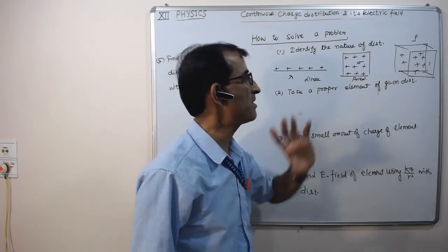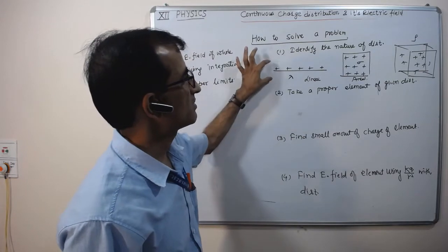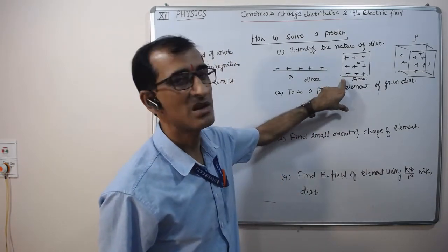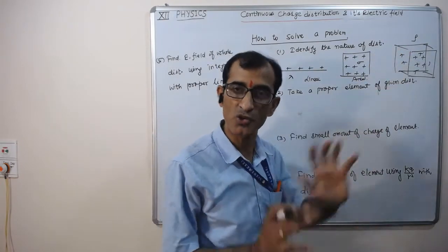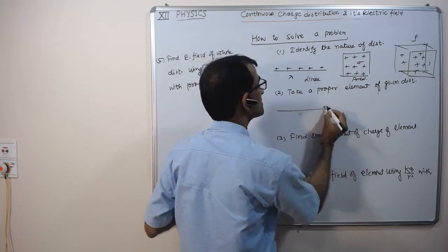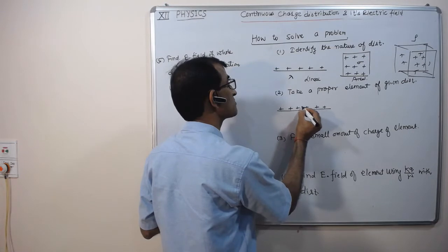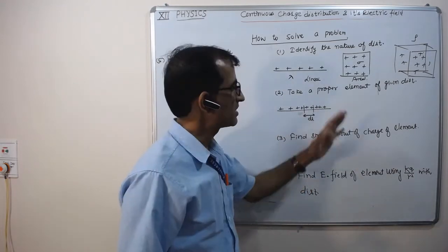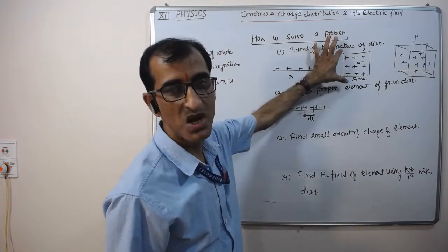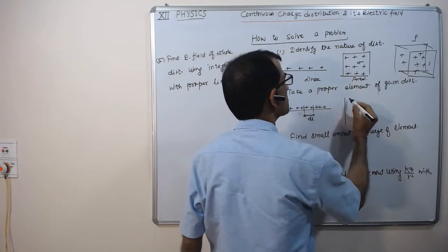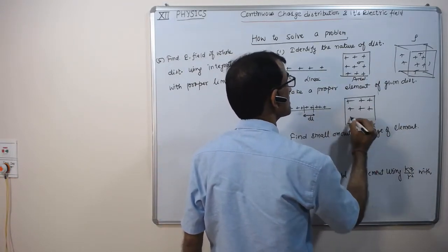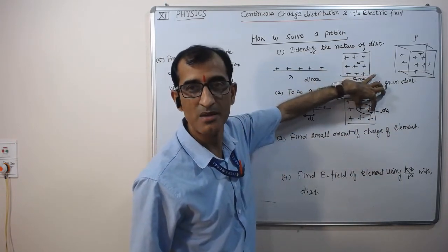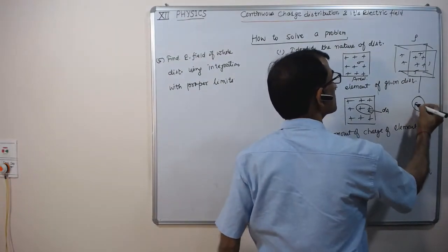Second step: take a proper element of the given distribution. For linear charge distribution, take a length element DL. For surface distribution, take an area element DA. For volume distribution, take a volume element DV. For example, for a charge distributed along a line, assume a small element of length DL. The amount of charge in this element is DQ.